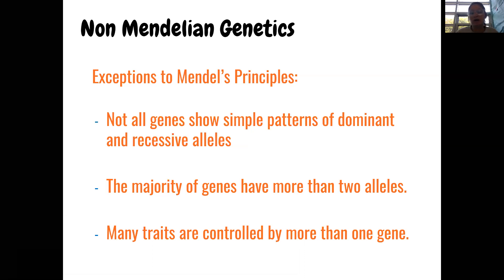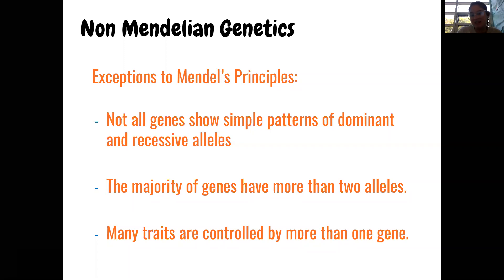Mendel's principles are based on observations of the real world. Based on all of his experiments and observations that just occur naturally in nature. His experiments were based on peas and flies. Those experiments yielded data, and the data basically led to the principles that he came up with.